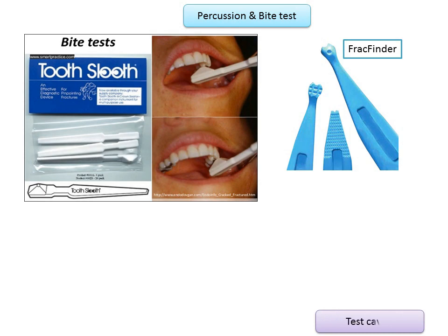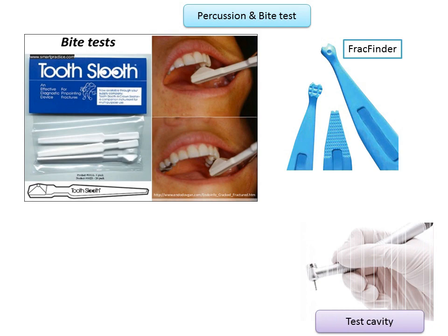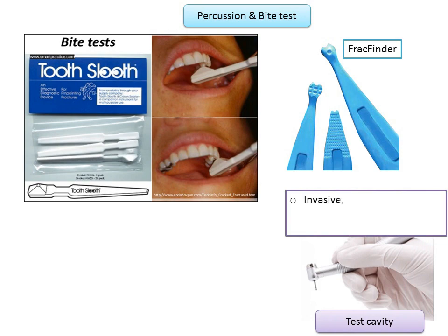The test cavity is used for assessing pulp vitality but is not routinely used since by definition it is an invasive and irreversible test. An example of when this method can be used is when the tooth suspected of having pulpal disease has a full coverage crown. If no sound tooth structure is available for a bridging technique with the electric pulp tester and cold test results are inconclusive, a small Class I cavity preparation is made through the occlusal surface of the crown. If the patient feels pain once the bur contacts sound dentine, the procedure is terminated and the cavity is restored. Whereas if the patient feels no sensation when the bur reaches the dentine, it indicates the pulp is necrotic and root canal therapy is indicated.